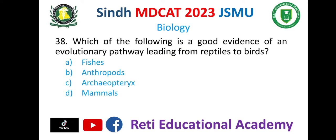Question number 38. Which of the following is good evidence of an evolutionary pathway leading from reptiles to birds? A. Fishes, B. Arthropods, C. Archaeopteryx, D. Mammals. The correct option is Archaeopteryx.